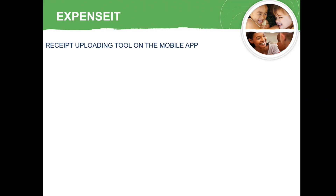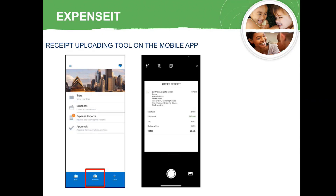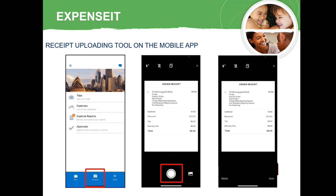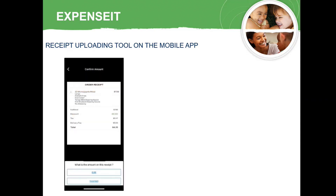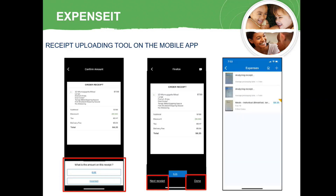The SAP Concur Mobile app has many features that can assist with expense reconciliations, including Expense It, a receipt uploading tool that can be used on the go and eliminates the need to scan receipts to your PC before uploading them to your account. To use this feature, open the app on your mobile device and select Expense It. Then align your receipt image in the window and click the camera button. Review the image and either select Retake or Done. After selecting Done, verify the receipt amount is correct or select Incorrect and enter the correct amount. Select Next Receipt to scan another or Done to finish up. When the receipt completes the analyzing process, it will be listed in your available expenses.